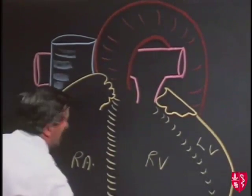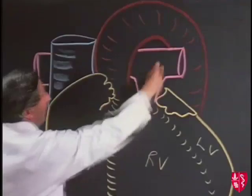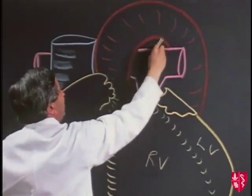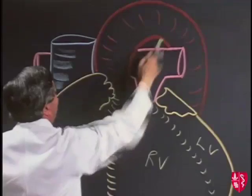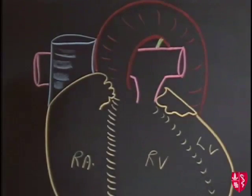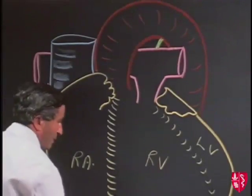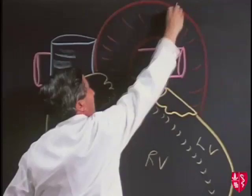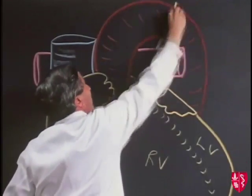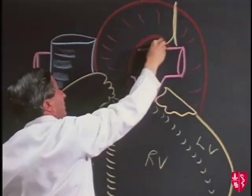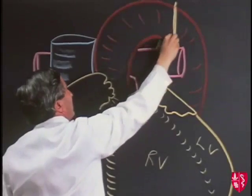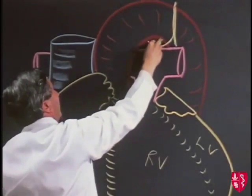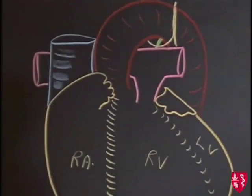We can also indicate the position of a very important structure going across between the arch of the aorta and the pulmonary trunk — the ligamentum arteriosum. And if we wanted to be absolutely accurate here, we could bring down the vagus nerve and show the recurrent laryngeal nerve arching round underneath there and going up on the left side as the left recurrent laryngeal nerve.